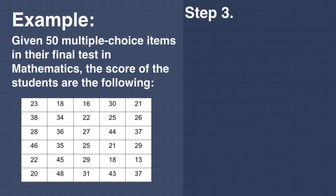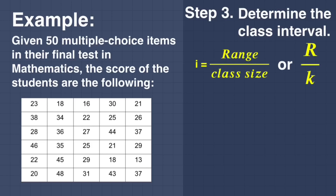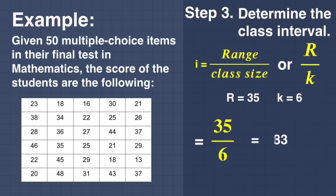For step number 3, determine the class interval. The formula is I equal to range divided by class size, or R divided by K. Since R is equal to 35 and K is equal to 6, we substitute: 35 divided by 6 equals 5.83. Round up — that is approximately 6.